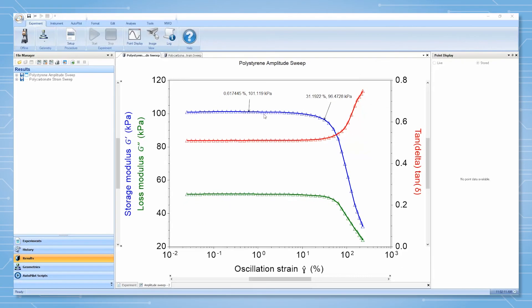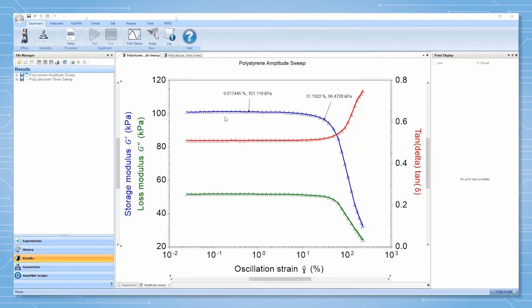The strain or amplitude should be selected at a point in the plateau where the data is not noisy and the point display shows smooth and sinusoidal curves.